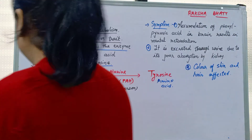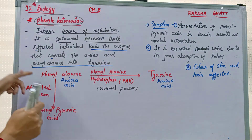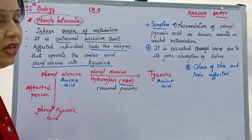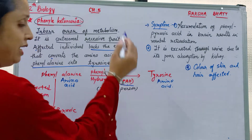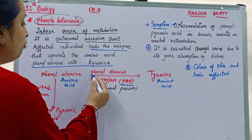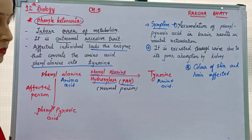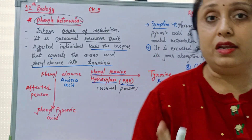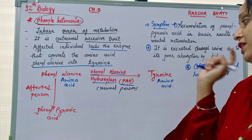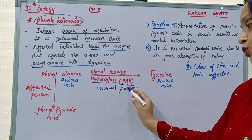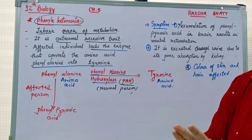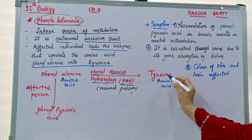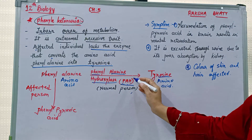One of those amino acids is phenylalanine. This phenylalanine, with the help of the enzyme PAH — phenylalanine hydroxylase — is converted into tyrosine in a normal, non-affected person.